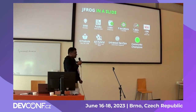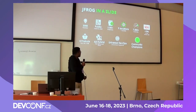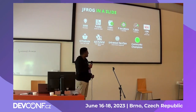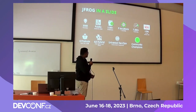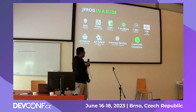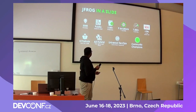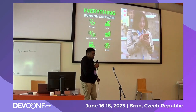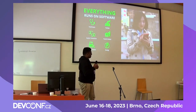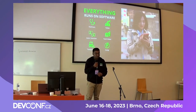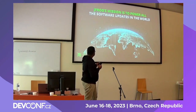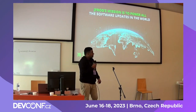JFrog is founded in 2008, it's a public listed company. It has around 1,100 employees, around nine locations, with a 7,000 customer base and six products covering Kubernetes, hybrid OSS, and multi-cloud. We have a universal DevOps stack. As you know, software runs everywhere — on your mobile, iPhone or Android. Google and Apple use our back-end to push those software updates.